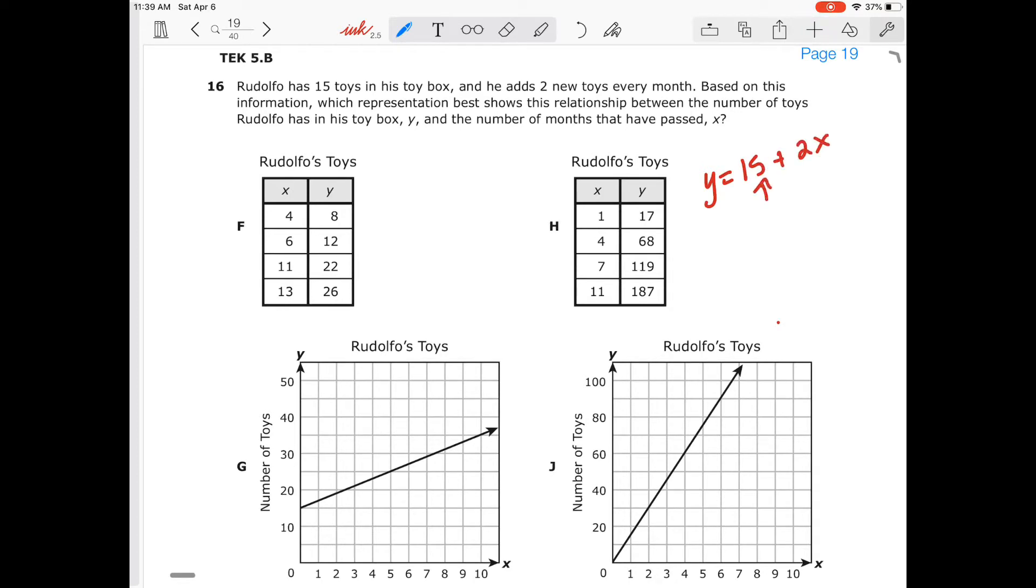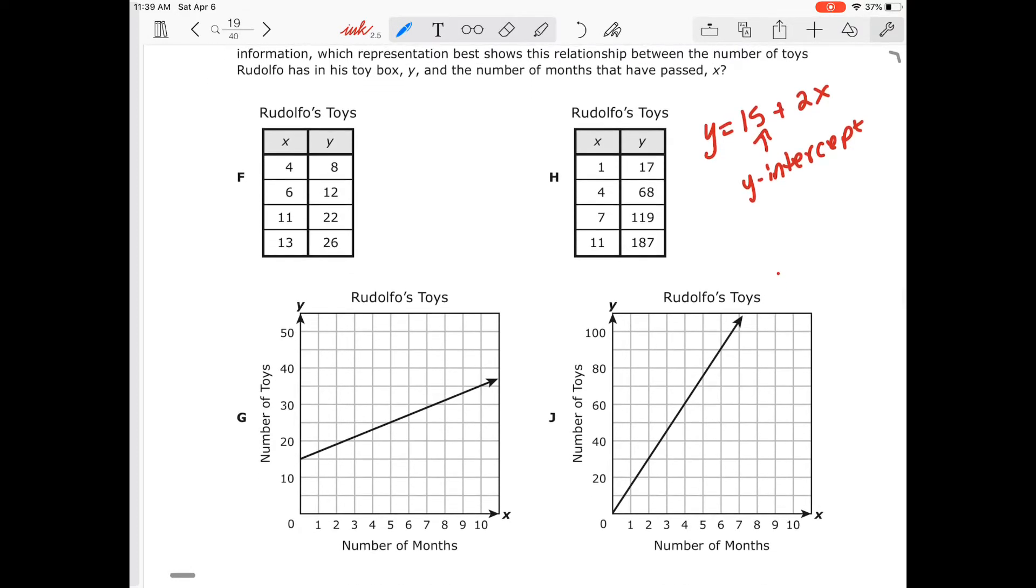So our equation would be y equals 15 plus 2x. Well, remember, this is our b value. That's our y-intercept. Because he starts out the month, our input is zero. So he starts out with 15. Well, that eliminates H, because that doesn't have that, and that eliminates F as well. Then that eliminates J. So our only possible answer choice is G.